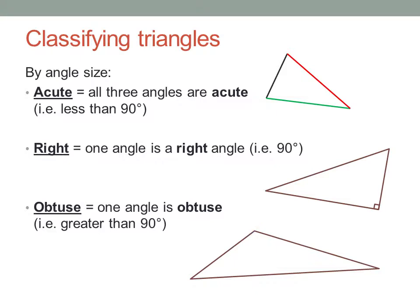An equilateral triangle is also an acute triangle, because every angle will be the same, 60 degrees.